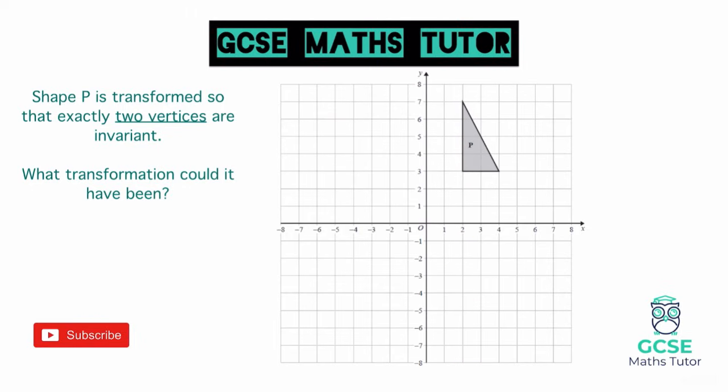We could also look at a diagonal reflection line, though at GCSE level this is only required for the lines y equals x or y equals negative x. For the purpose of this example, reflecting in the hypotenuse line would also give two invariant points. There are lots of different ways to achieve this, but the horizontal and vertical line reflections are the easiest and most relevant approaches.